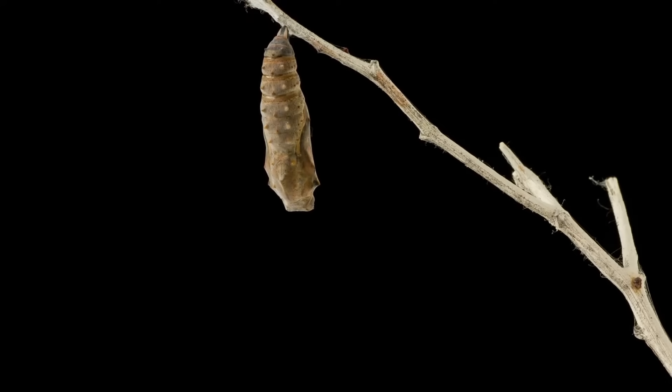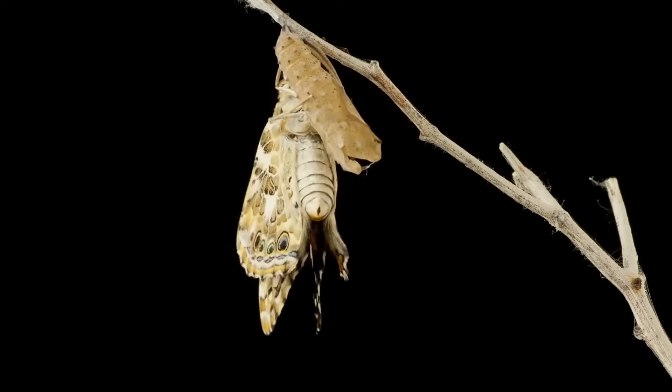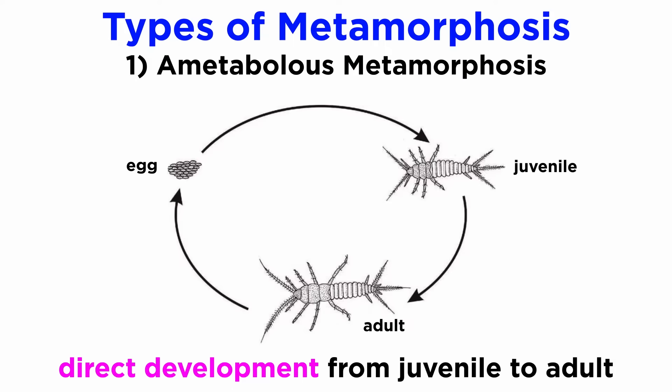Hatched eggs then go through one of three types of metamorphosis that varies primarily by order. For example, a few insects, such as the silverfish, go through direct development, or ametabolous metamorphosis, where the young are similar to the parents, except smaller and sexually immature. Their stages are therefore egg, juvenile, adult.